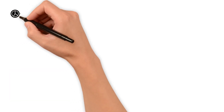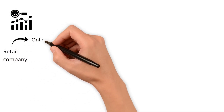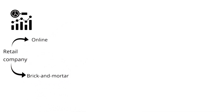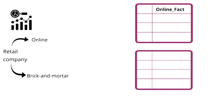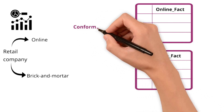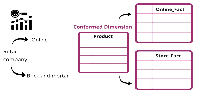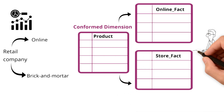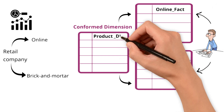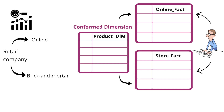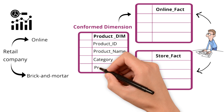In the context of data analytics, consider a retail company that operates both online and brick-and-mortar stores. This company might have separate fact tables for online sales and in-store sales. A conformed dimension would be the product dimension used by both fact tables. Regardless of whether the analyst is examining online or in-store tables, the product dimension will have a consistent set of attributes such as product ID, product name, category, and price.